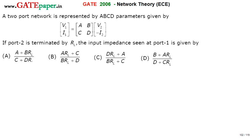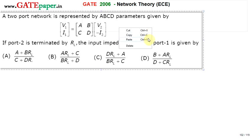Hello, we are discussing GATE 2006 ECE paper. A two-port network is represented by ABCD parameters given with equations. If port 2 is terminated by RL, find the input impedance seen at port 1.